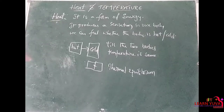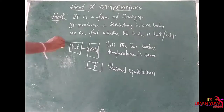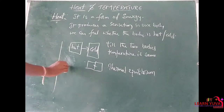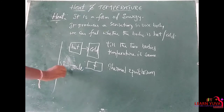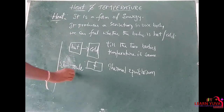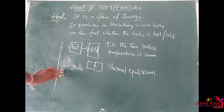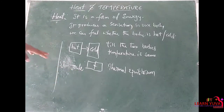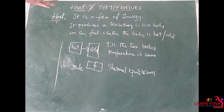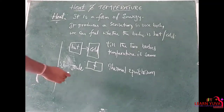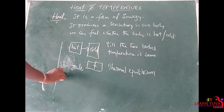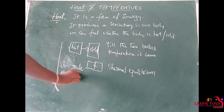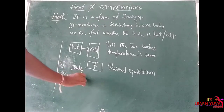Coming to the units: the SI unit for heat is the joule. The CGS unit is the calorie. The joule is the SI unit, and another common unit is the calorie.